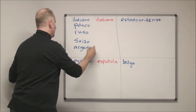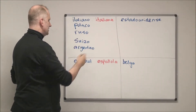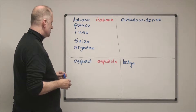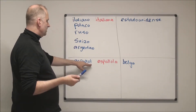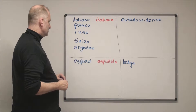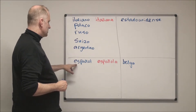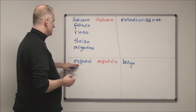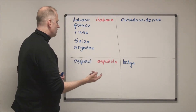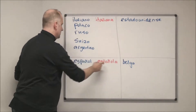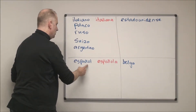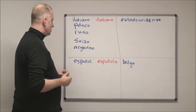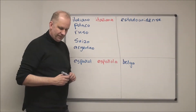The next group of adjectives is ones that in the masculine end in a consonant. For example, 'español' describing a male Spanish person. What you do is just add an -a, so it goes from 'español' — three syllables — to 'española' — four syllables.